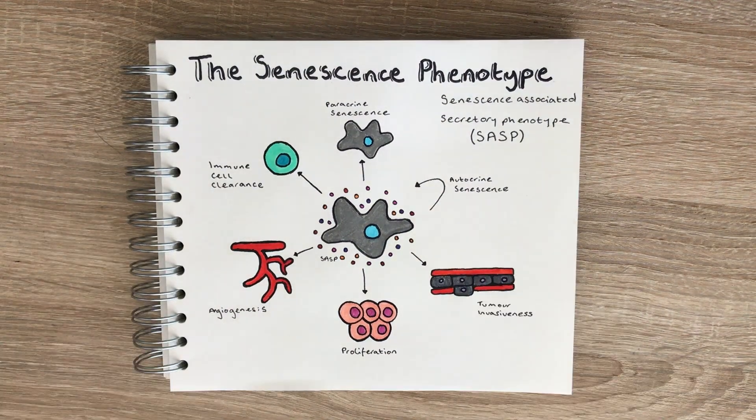Although senescence has traditionally been viewed as a protective anti-cancer mechanism, which is of course important, it's also evident that these cells can be damaging. As I explained in the previous tutorial on ageing, the accumulation of senescent cells as we age can become very detrimental and lead not only to ageing but also to some age-related diseases.